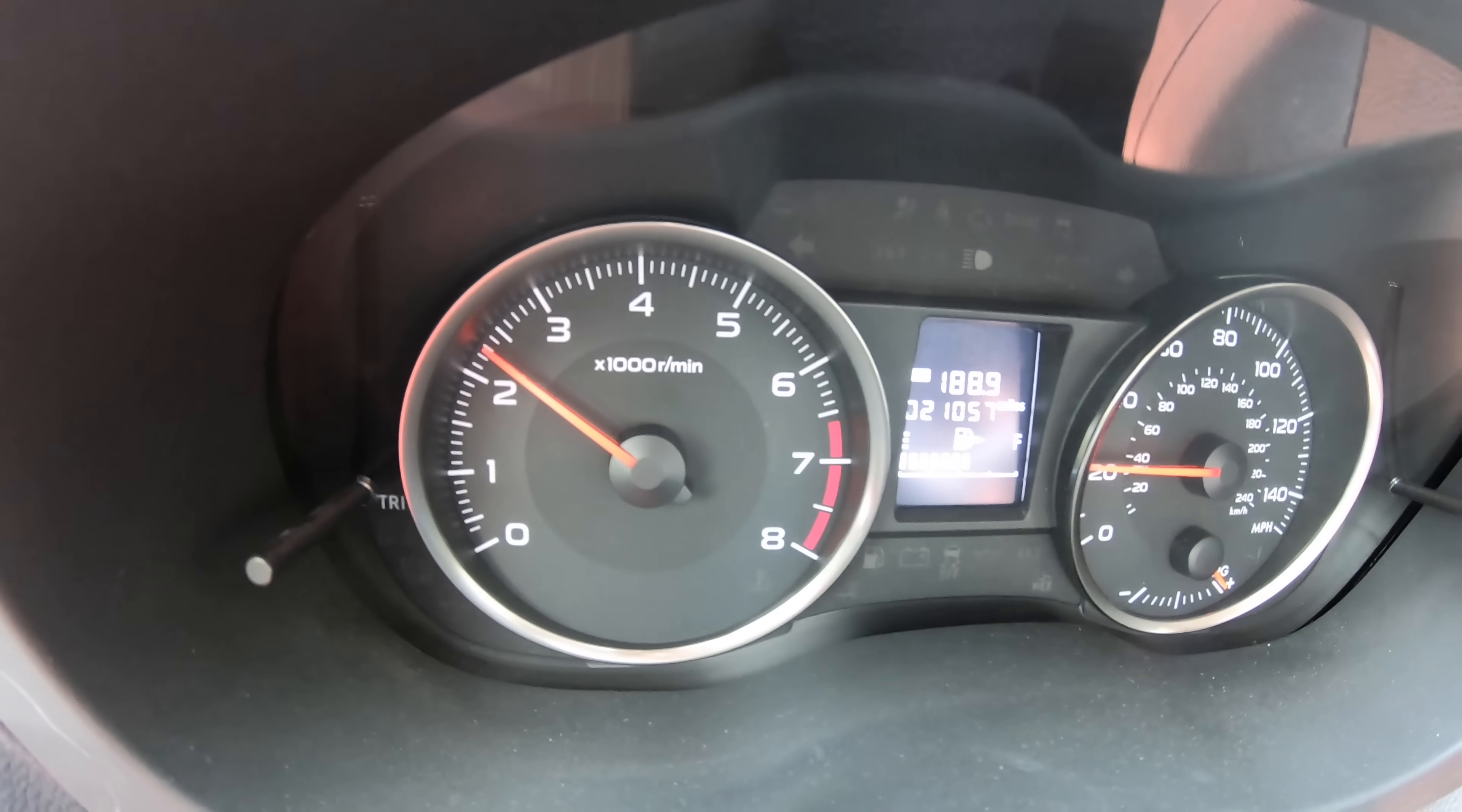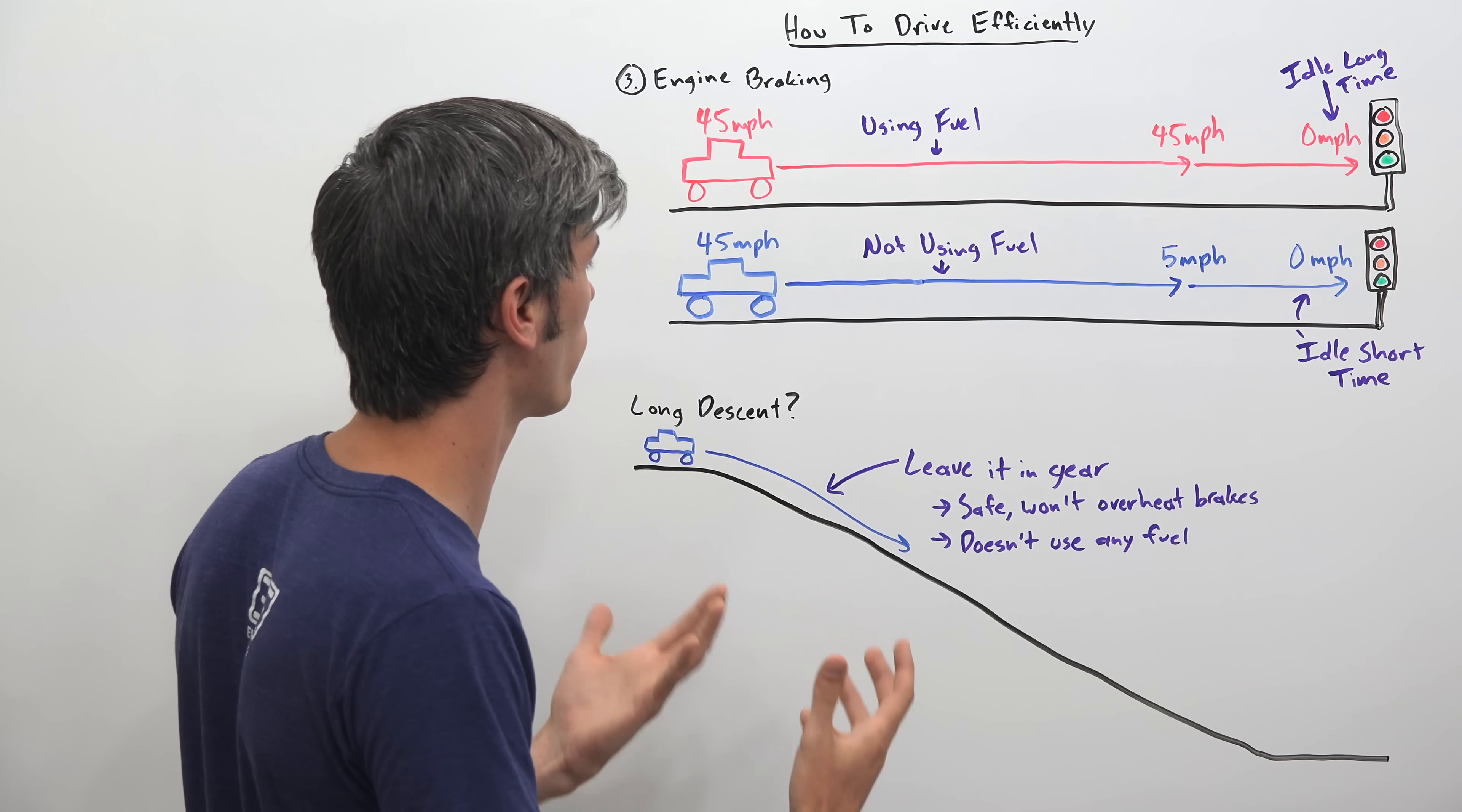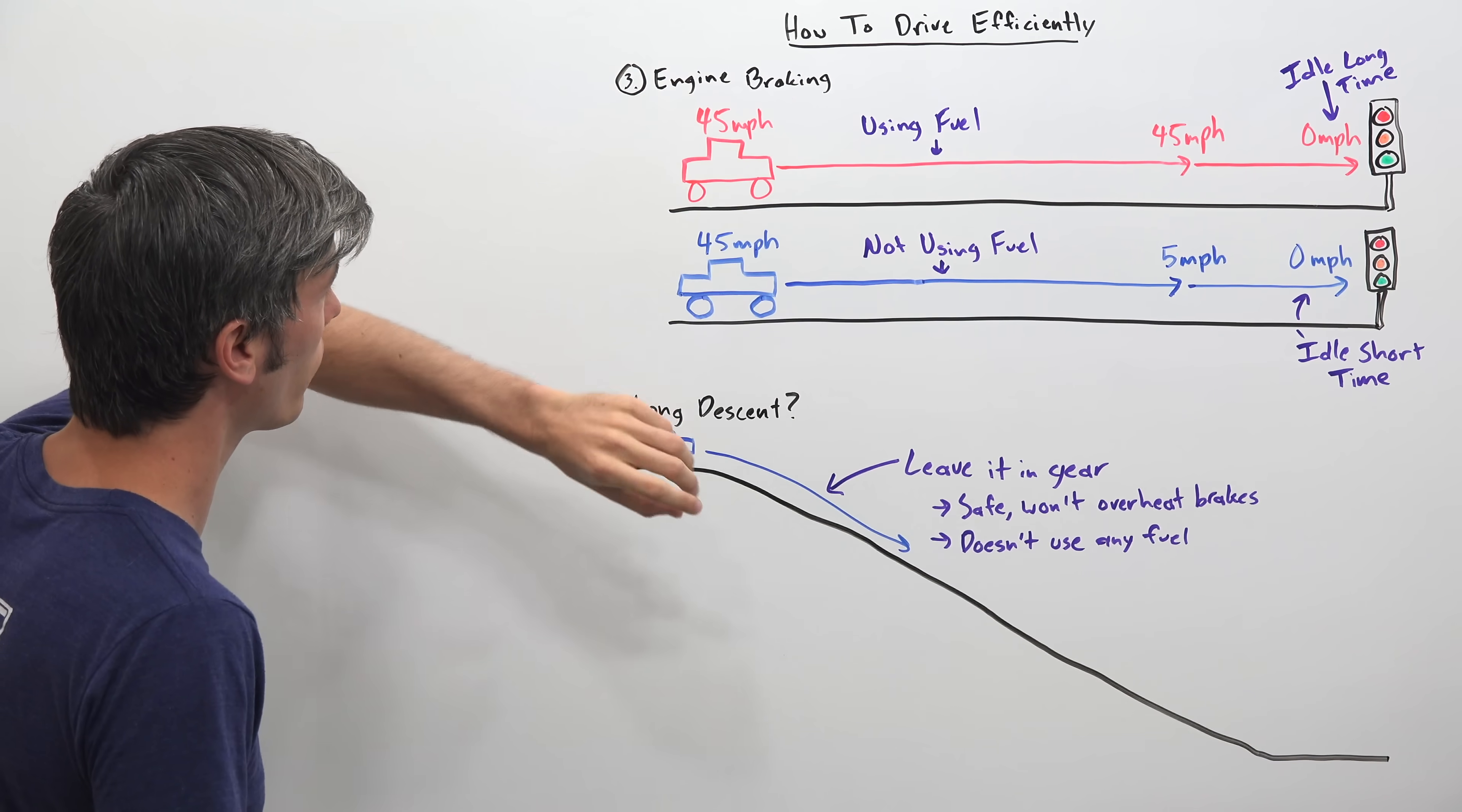The third technique is engine braking. So in modern cars, if you let off the throttle and you leave the transmission in gear, the engine actually injects no fuel at all. So you're not using any fuel. So you can use this knowledge to your advantage in different scenarios. So for example here, if we are approaching a stoplight and we know that we're going to have to stop. There's too much time that's going to pass. We can't use that first technique we were talking about. We know we're going to have to come to a stop.